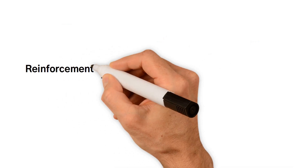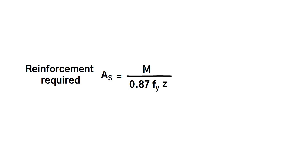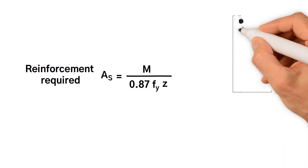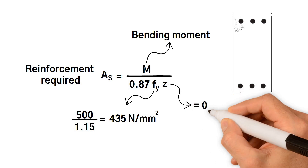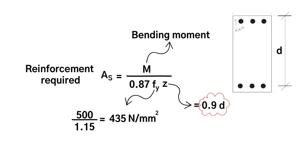The following equation is a quick way to determine reinforcement required in a concrete section without going through the entire design, which you can do later. There will be a lot of times when you're creating concrete frame models or doing quick checks — you will have some bending moments from the analysis and need a rough idea of what reinforcement you need in the section, or if the depth of section is adequate. You only have three variables: the ultimate moment from the analysis, steel strength which is just a constant, and the effective depth of reinforcement, which you can work out from the compressive face of concrete to the center of reinforcement.